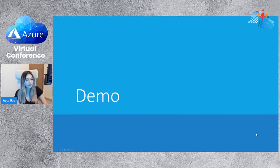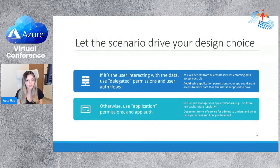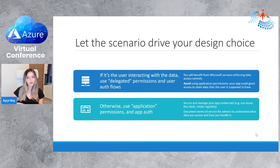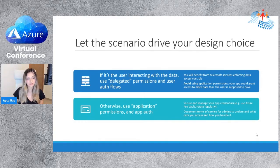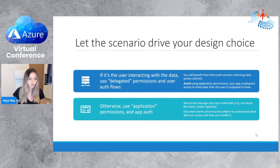Last but not least, let the scenario drive your design choice. If your scenario is user-interactive — building a web app where the user logs in for personal stuff — use delegated permissions. If it's a background process running in Function Apps or Logic Apps, an automation or provisioning scenario, it's better to use application permissions and app authentication.